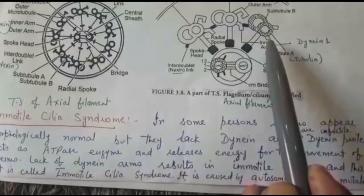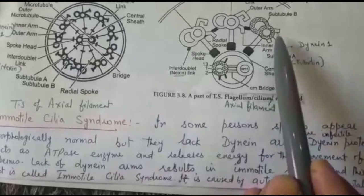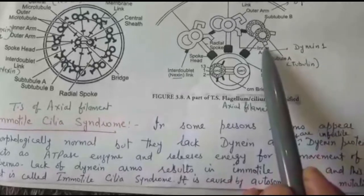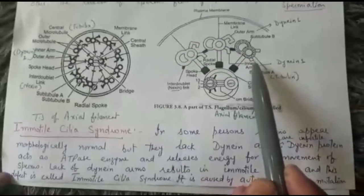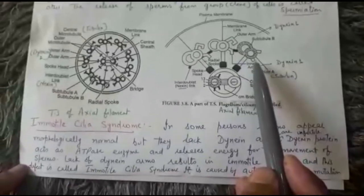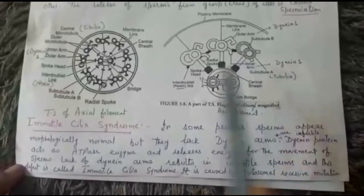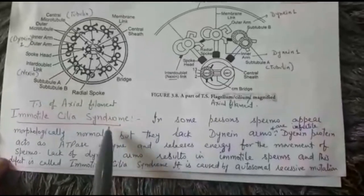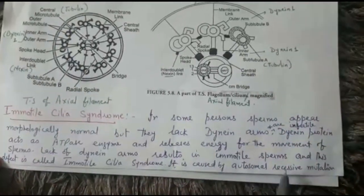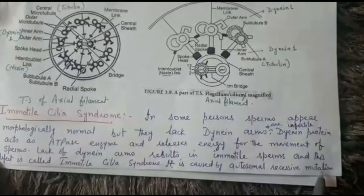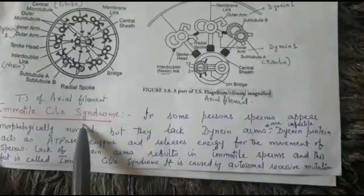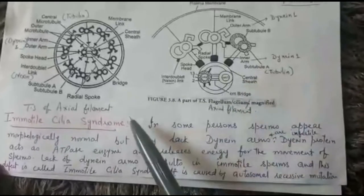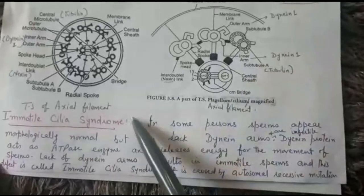Because the dynein arms are absent, the person lacks the ATPase enzyme that converts ATP into ADP and inorganic phosphate to provide energy for sperm movement. Due to the lack of dynein arms, sperms cannot move and the person is infertile. This disorder, known as immotile cilia syndrome, is caused by an autosomal recessive mutation.